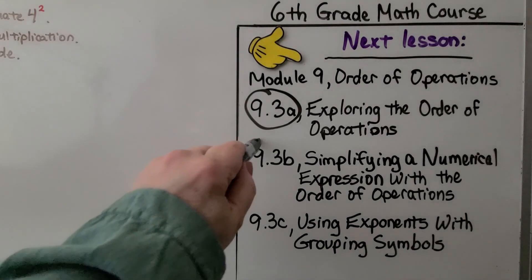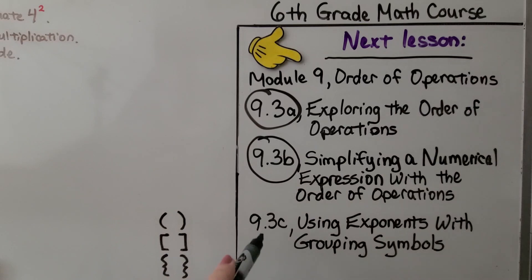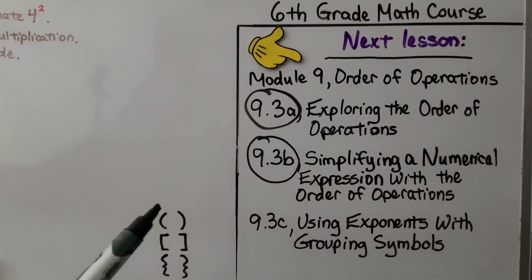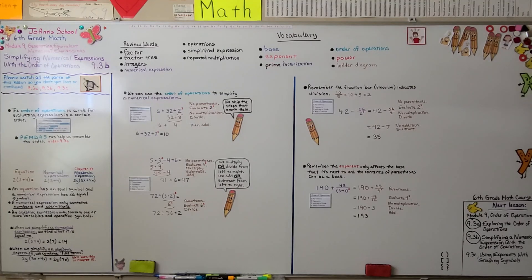We've finished the second part of the lesson. We're going to move on to the last part: using exponents with grouping symbols — parentheses, brackets, and braces. Remember, if the operation is not in the expression, just skip it and move on to the next one. I hope you have a great day, and I hope you'll join me next time. Bye.